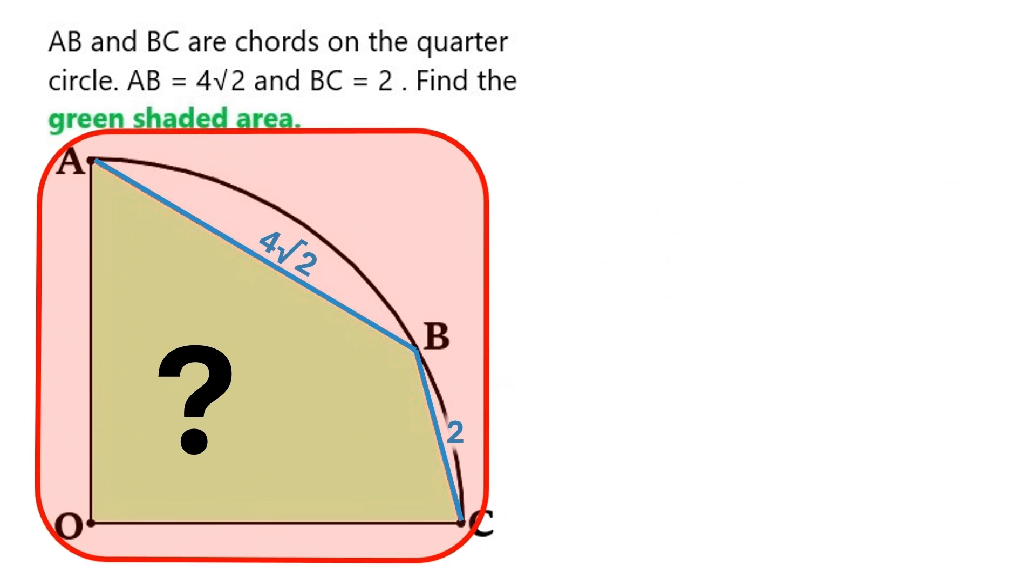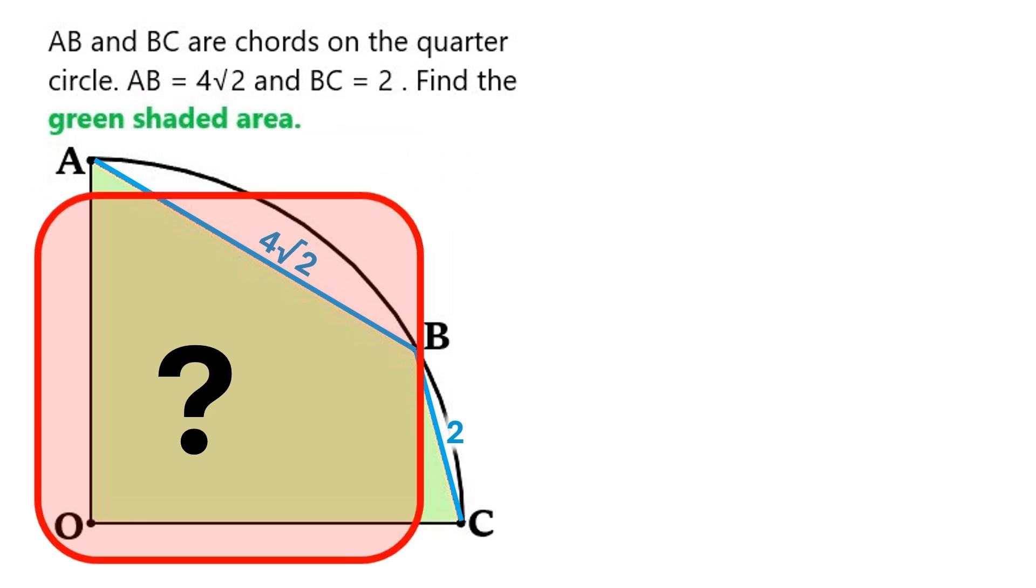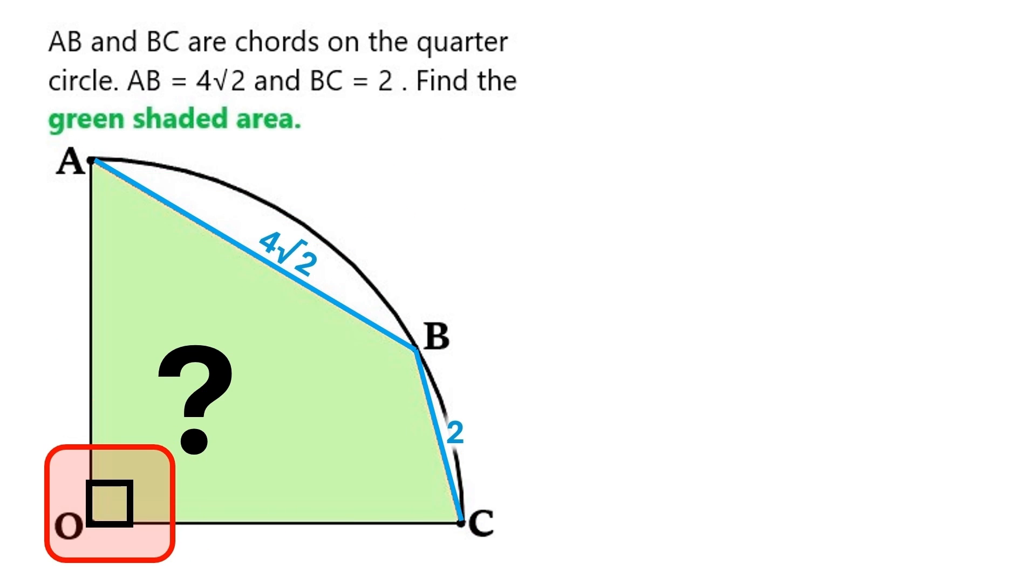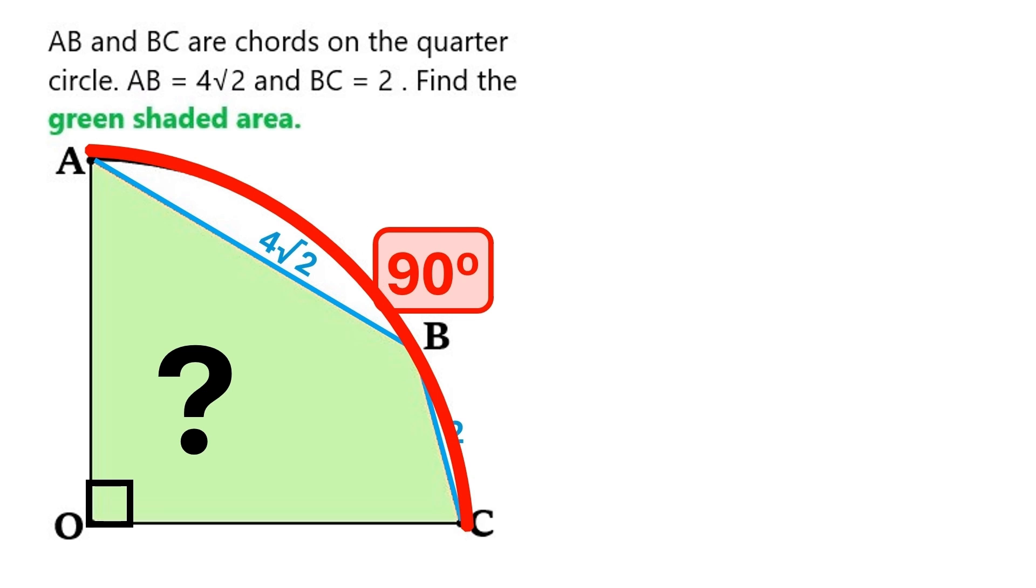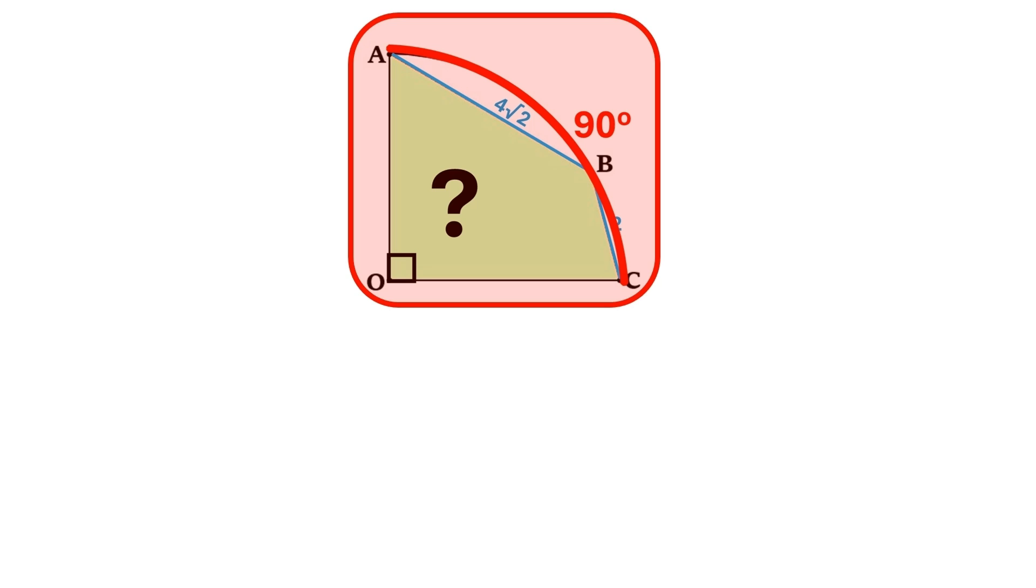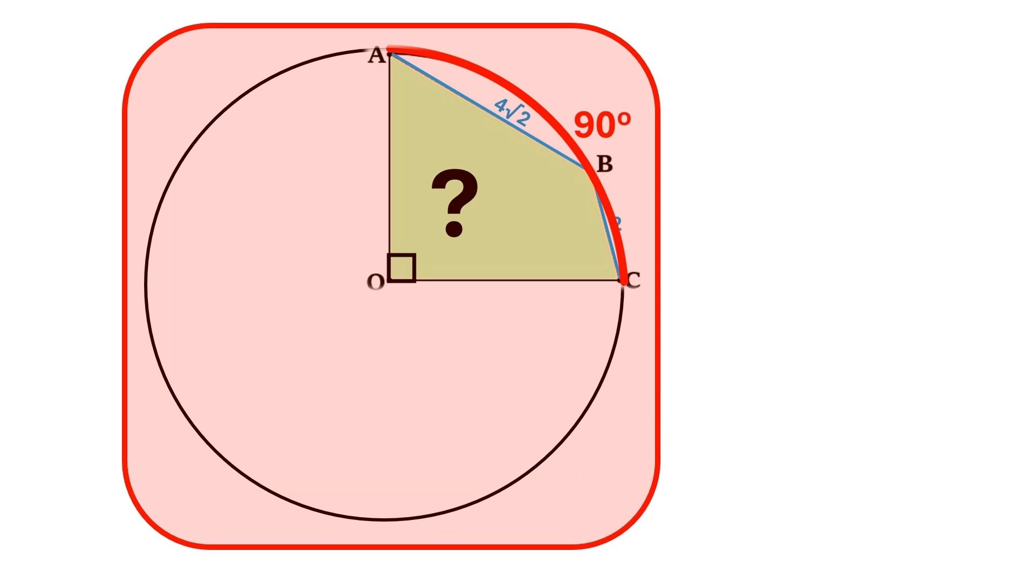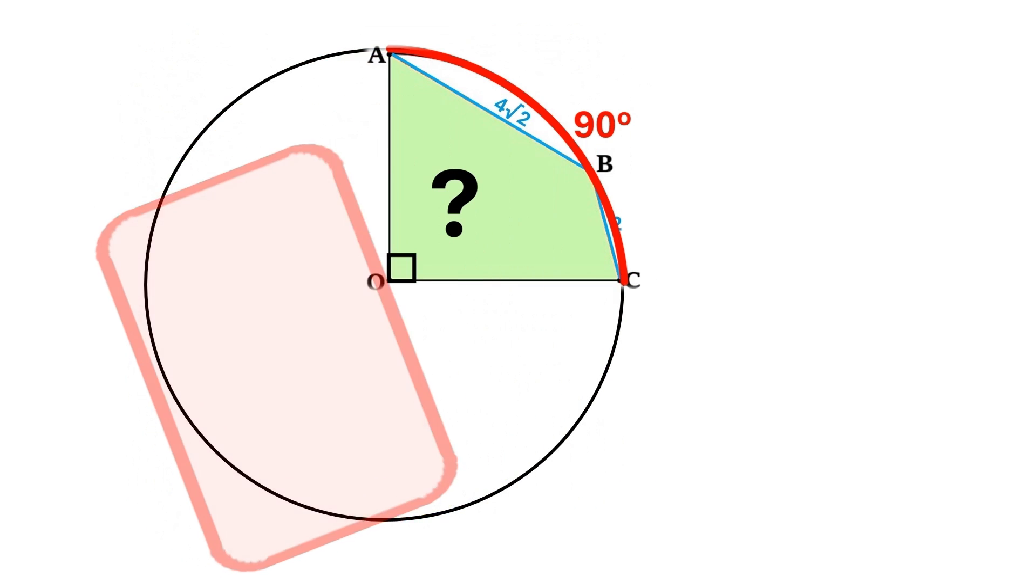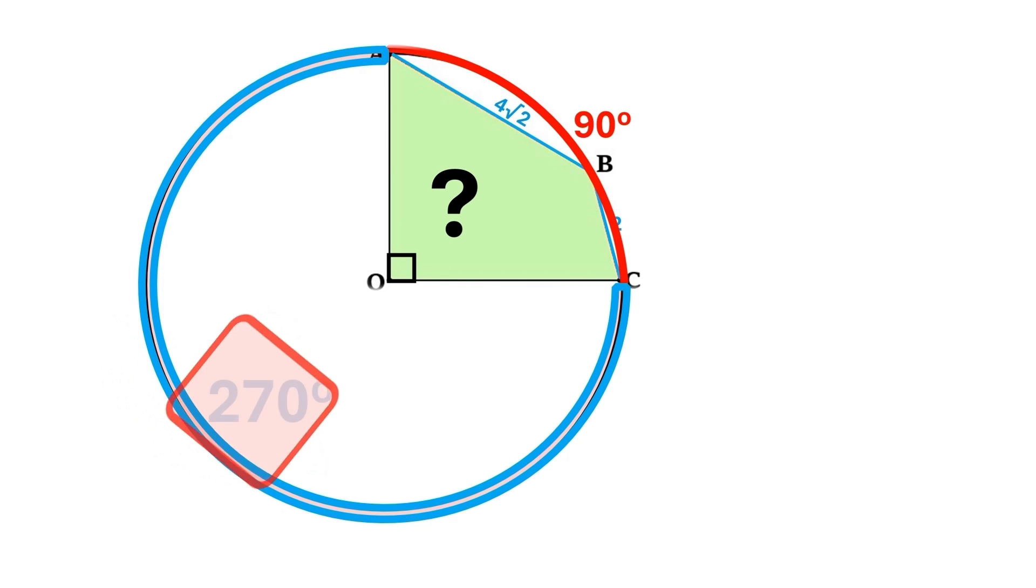We know that this shape is a quarter circle, which means this angle down here must be a right angle, and this whole arc has to be 90 degrees too. Let's take this entire diagram and move it up here so that we can complete this circle like this. Since a full circle is always 360 degrees, it is clear that this blue arc here must be 270 degrees.